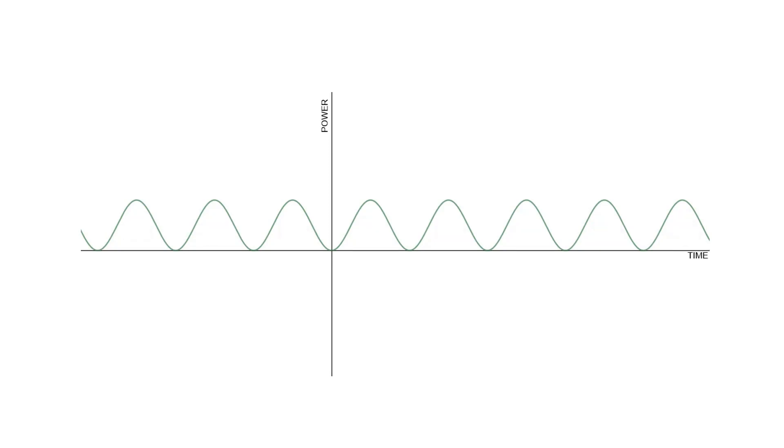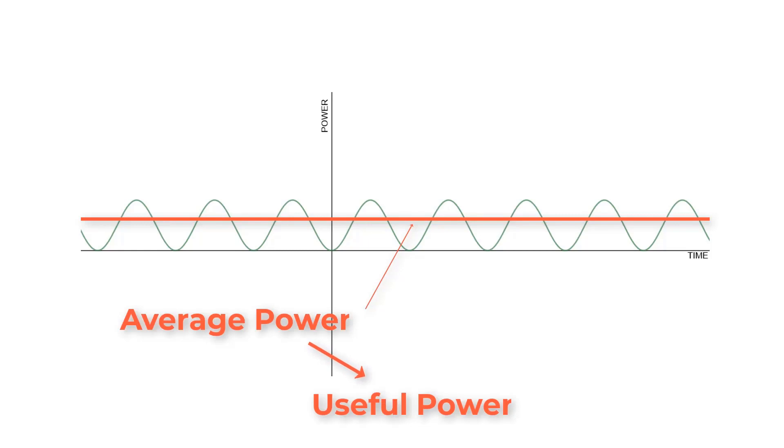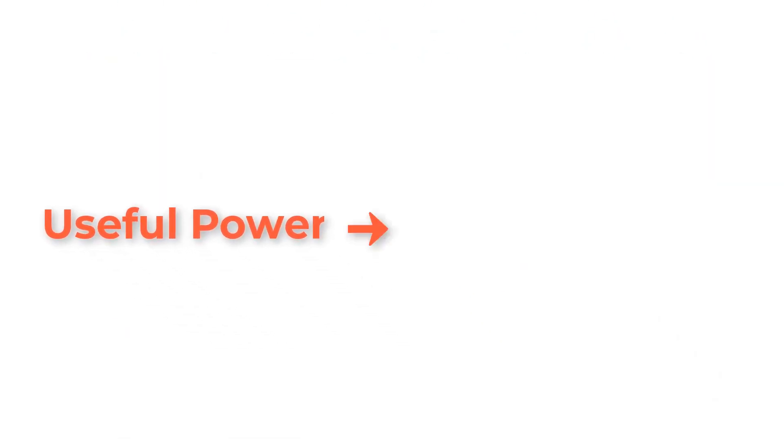This waveform is called instantaneous power, which means that power changes with time. Calculate the average power for this waveform, which is the useful power we use to illuminate a lamp or rotate a motor. This useful power is the active power P.